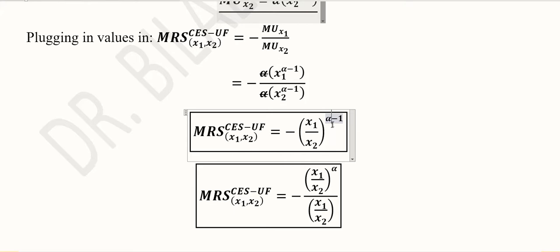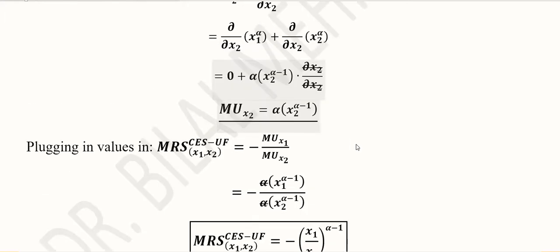And when we bring it down to the denominator, its sign, that is the power sign minus 1, will become plus 1. So in this way MRS can be calculated for a CES utility function. And these are the two possible ways of writing the answer.